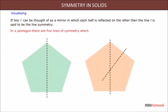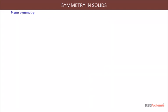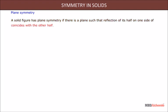Here we will learn about plane symmetry. A solid figure has plane symmetry if there is a plane such that the reflection of its half on one side coincides with the other half. Then it is said to be symmetrical.